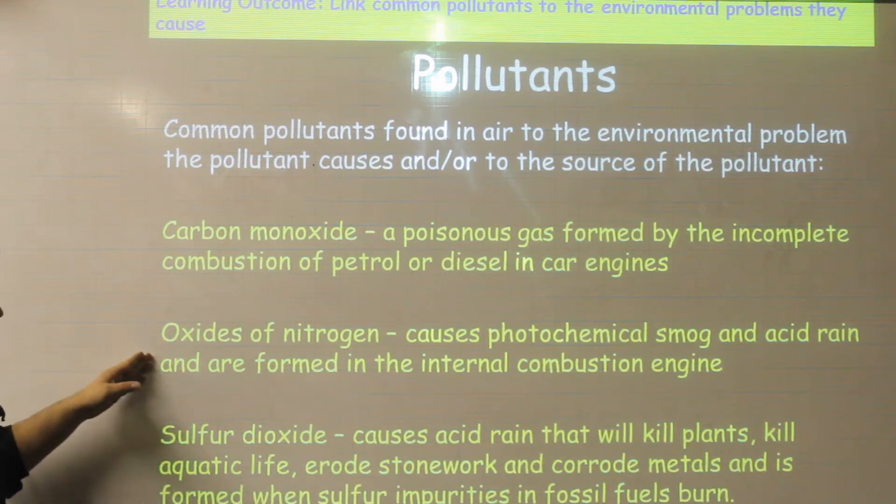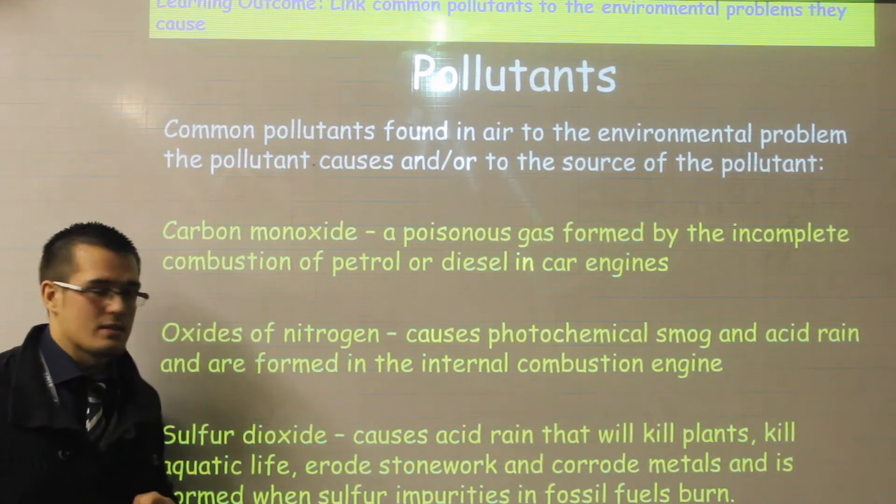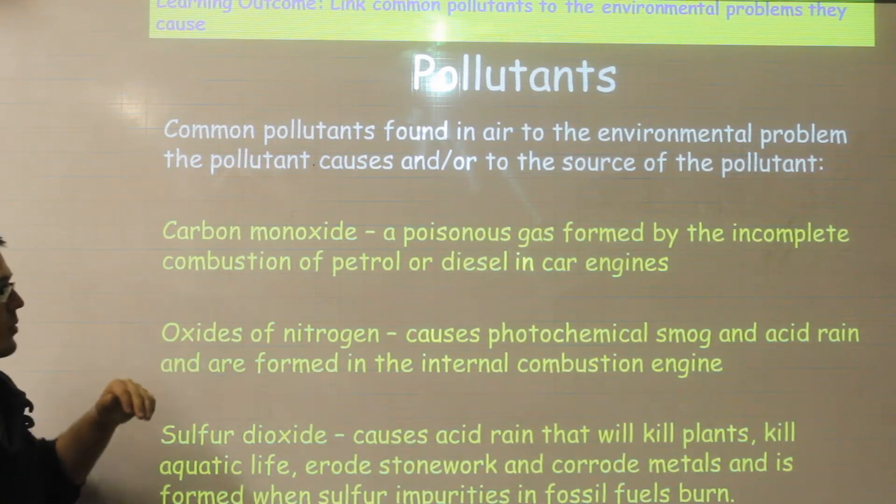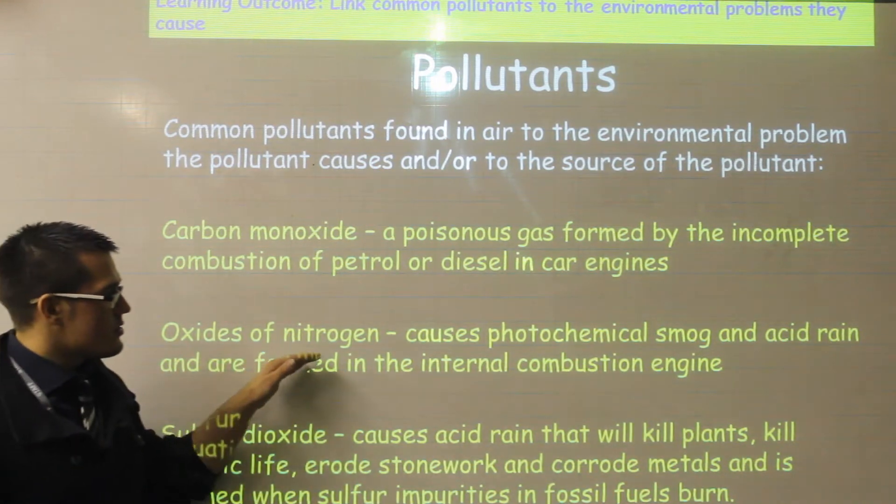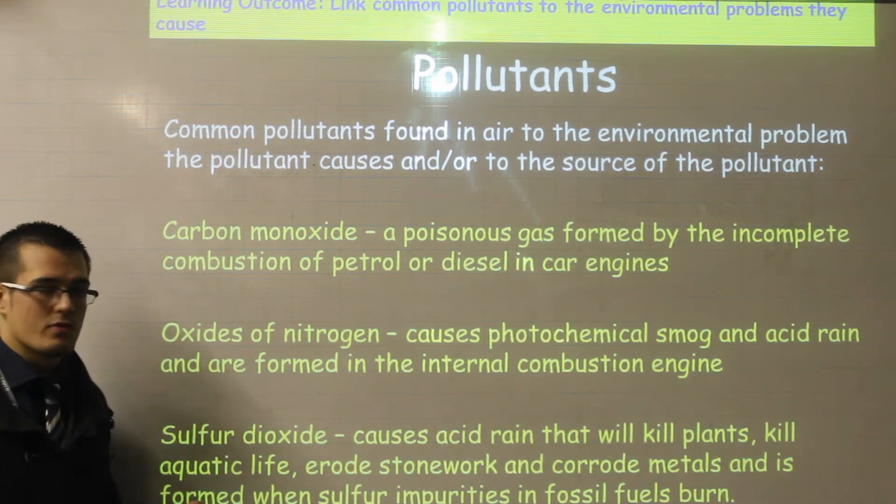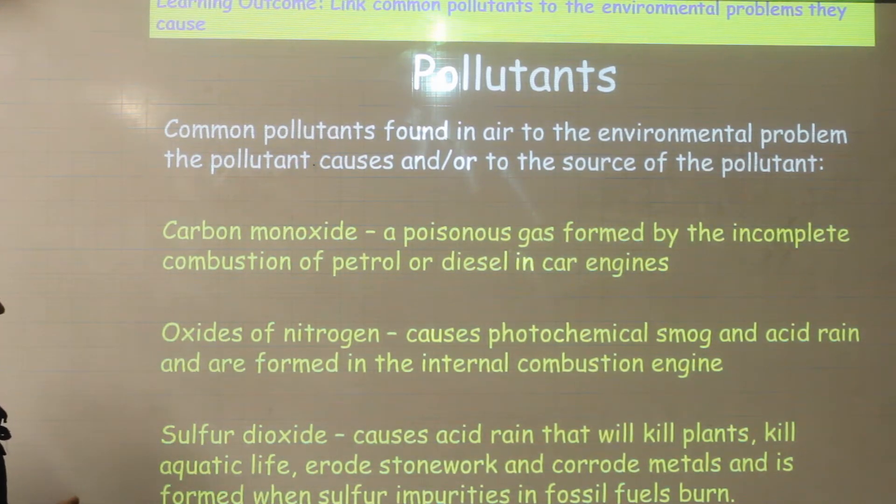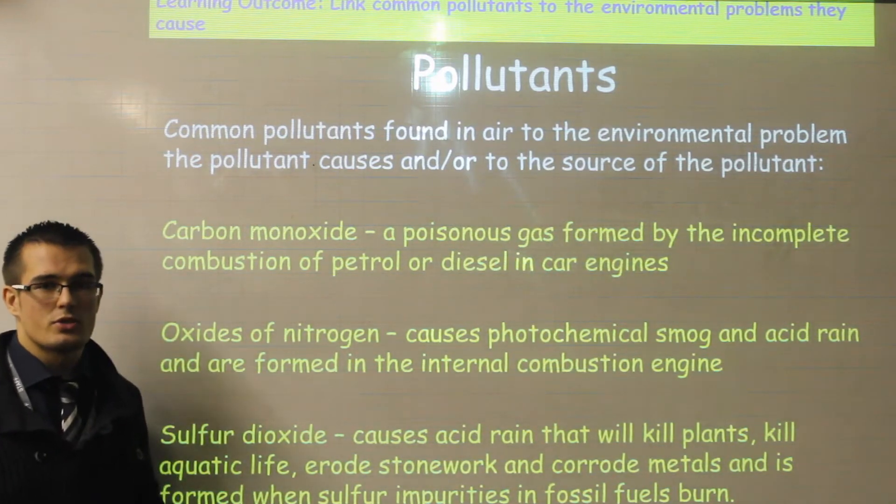The second important pollutant is oxides of nitrogen, which we sometimes call NOx gases. That could be nitrogen monoxide or nitrogen dioxide. Nitrogen oxides cause photochemical smog and can also be responsible for some degree of acid rain. Nitrogen oxides are formed inside internal combustion engines.